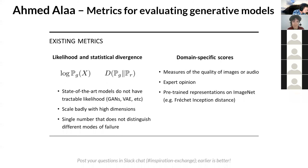There have been basically two schools of thought on how to evaluate generative models. The first relies on domain-specific expert opinion or domain-specific scores — like the inception score for image data that uses pre-trained representations using the ImageNet network. The other approach is based on statistical measures of divergence and likelihood. While the likelihood function is domain agnostic and can apply to various domains, it has many problems. Most state-of-the-art models like GANs and variational autoencoders do not have a tractable likelihood function. The likelihood can also be hard to interpret, can scale very badly with high dimensions, and it collapses different modes of failure into a single number that cannot diagnose why generative models fail.